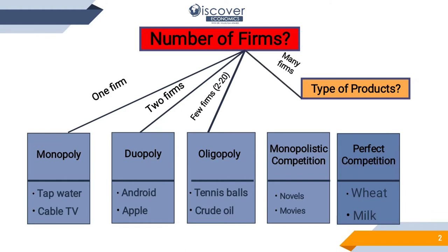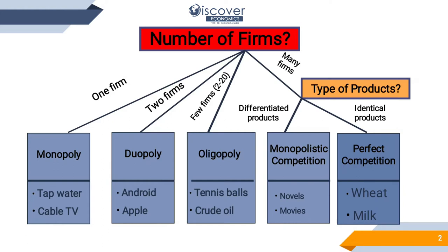Then comes the competitive type. In the competitive type, it is quite obvious that the firms are going to be more in number. So we have monopolistic competition and we have perfect competition. Let me explain how you can identify whether a firm is in perfect competition or in monopolistic competition.